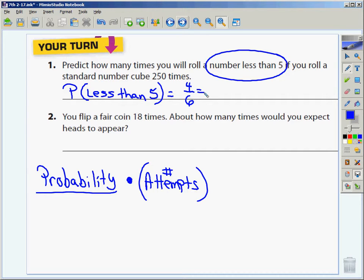But four-sixths, we could simplify that, correct? What would it simplify to? Two-thirds. So the first thing I'm going to find is the probability of the event actually taking place.